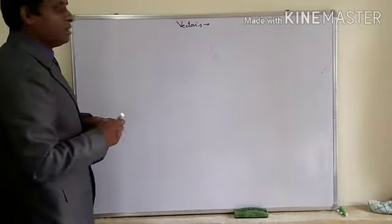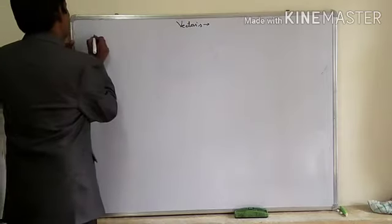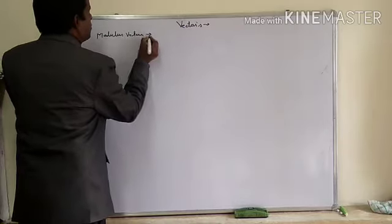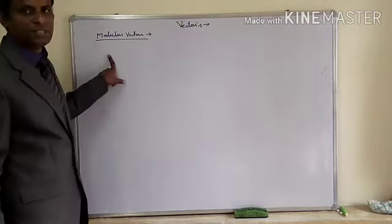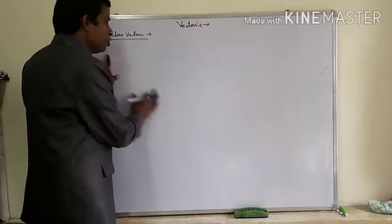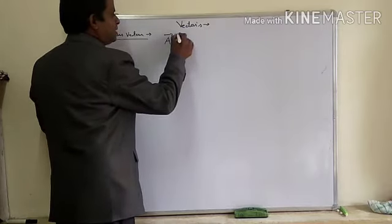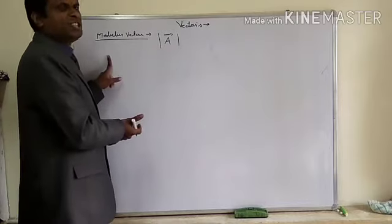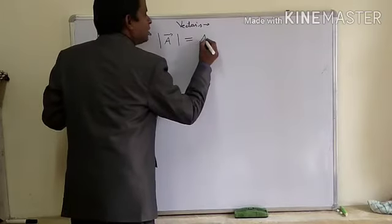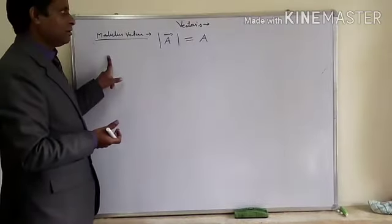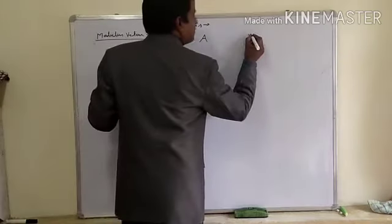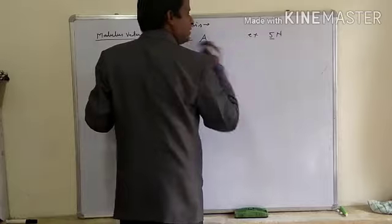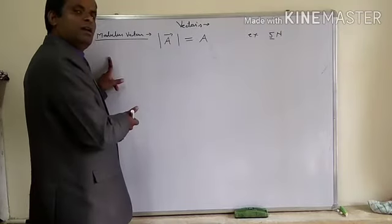For understanding the vector, you have to understand modulus vector or magnitude of vector. What do you mean by the modulus? If you are writing any vector A in the form of mod, this is called modulus vector — mod A vector means magnitude of vector. For example, if 5 Newton force is there, the magnitude is 5. So modulus vector is magnitude of vector.